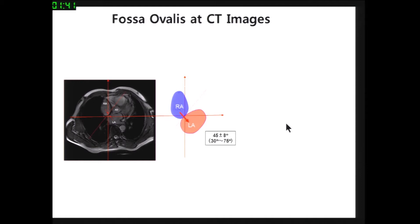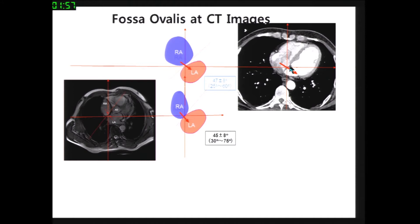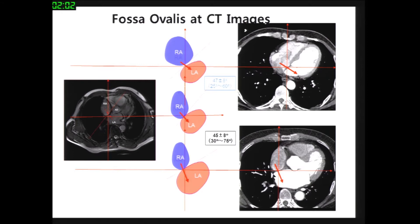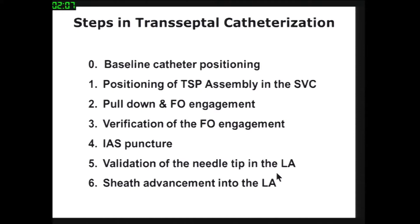The fossa ovalis in CT images is located variably. For one patient, the septal area is positioned such that the angle from the RA is about 45 degrees, and some patients have a broader and thicker septum. For other patients, the angulation is somewhat steeper. So we have many considerations about anatomy before transseptal puncture.